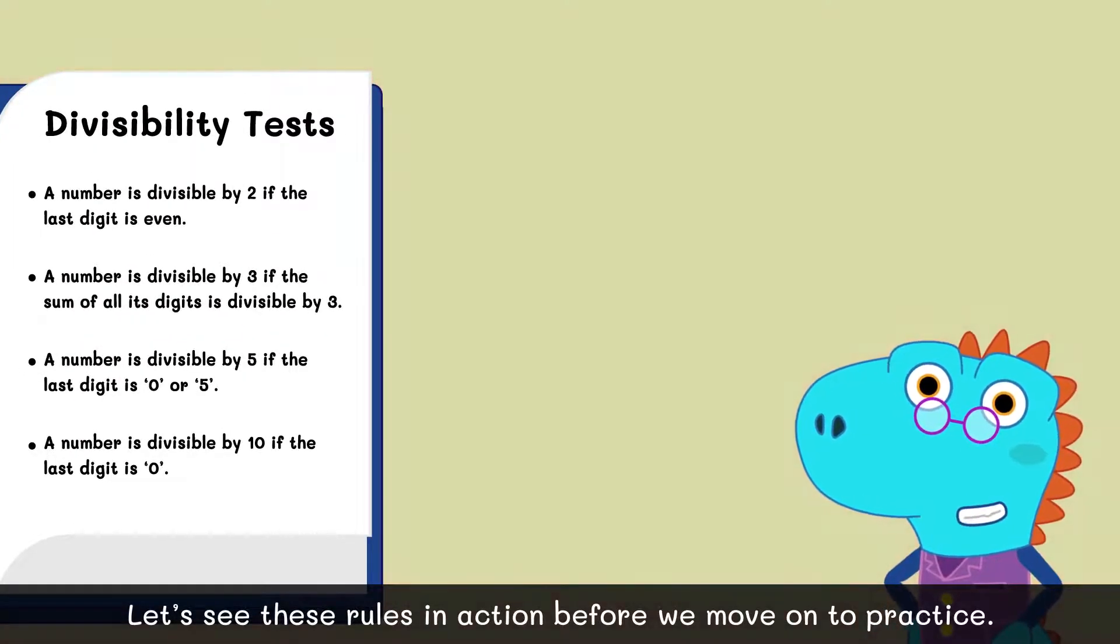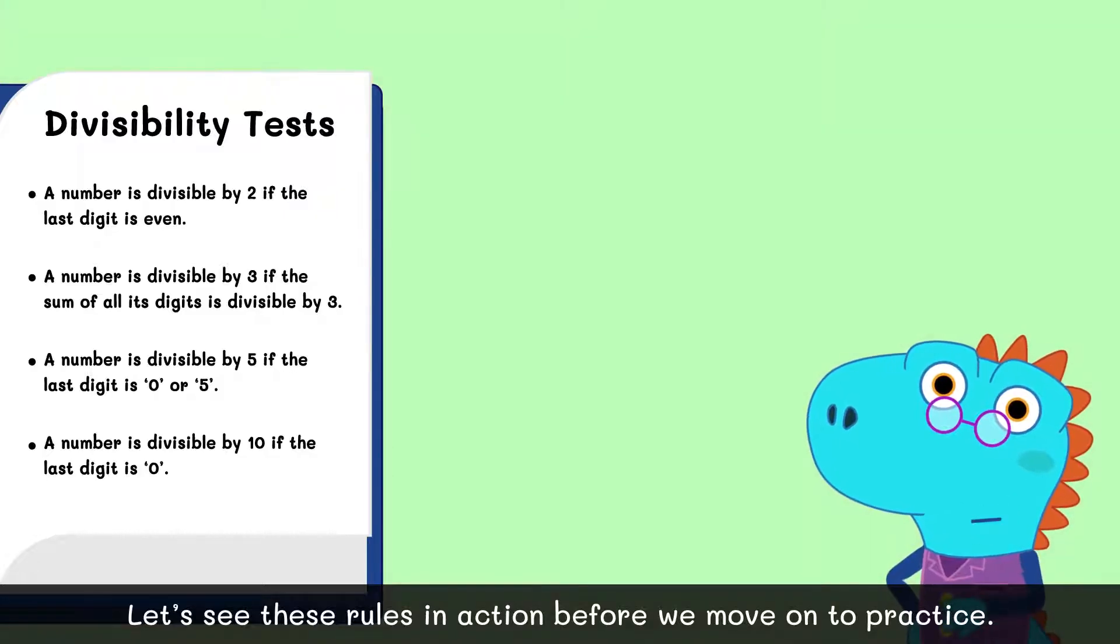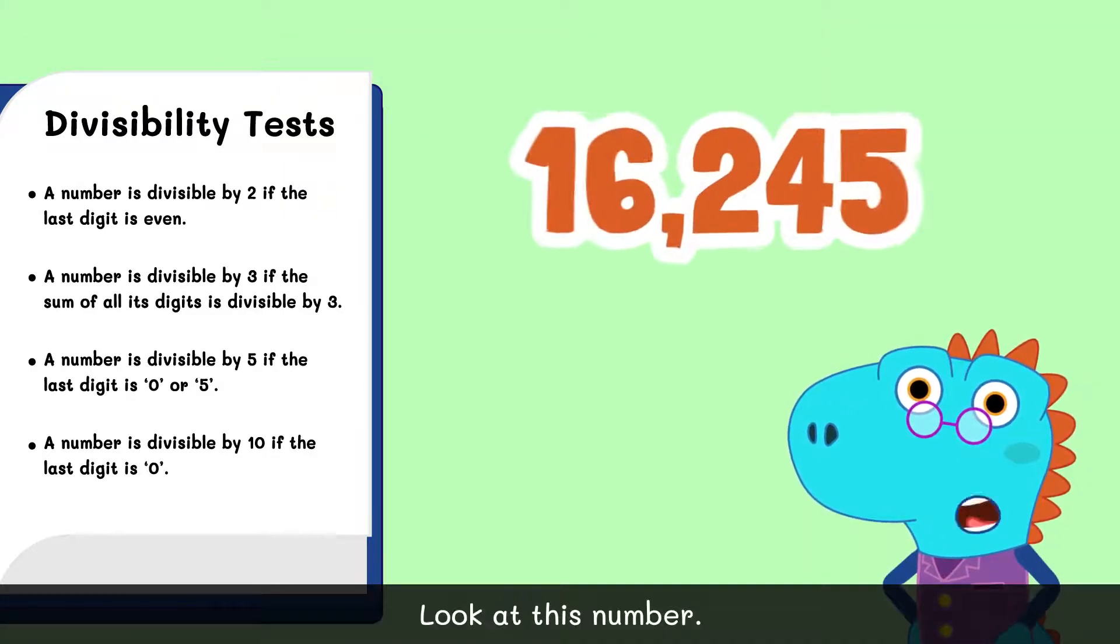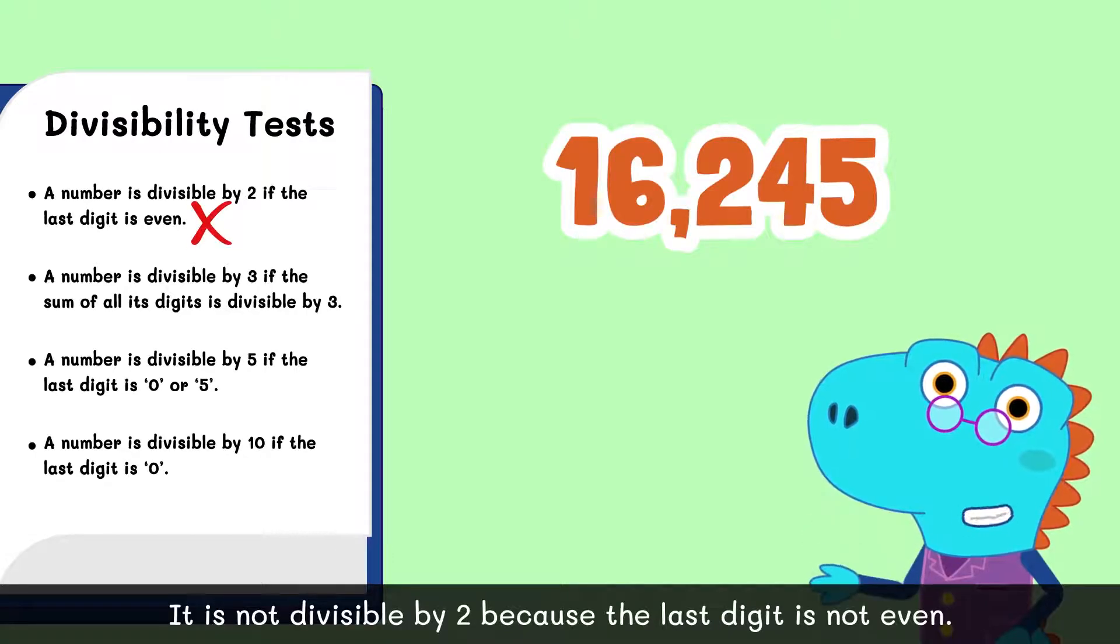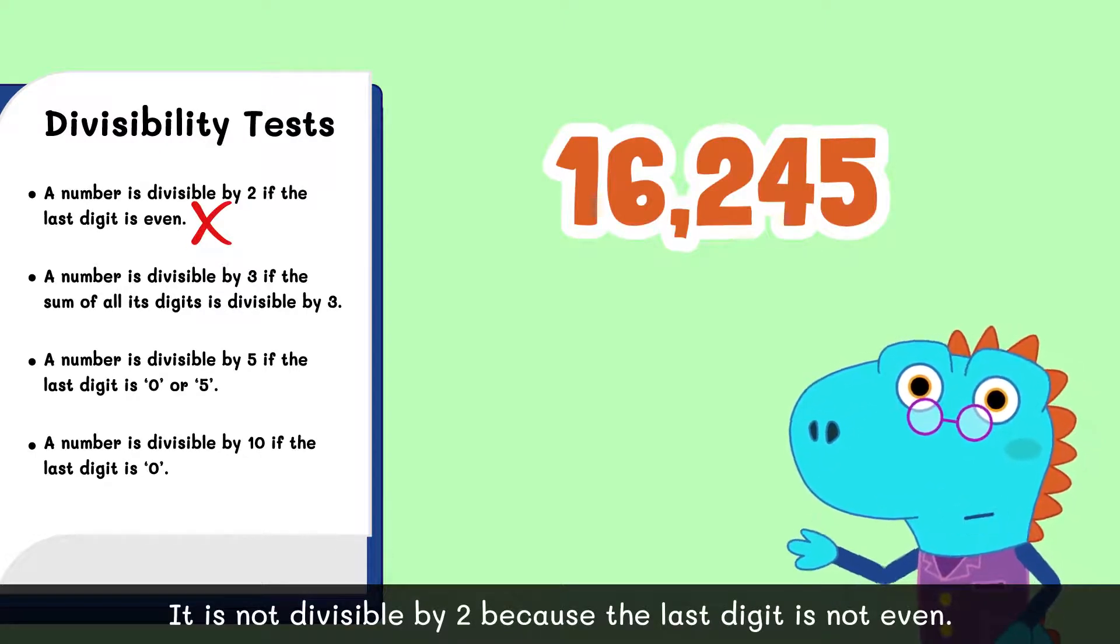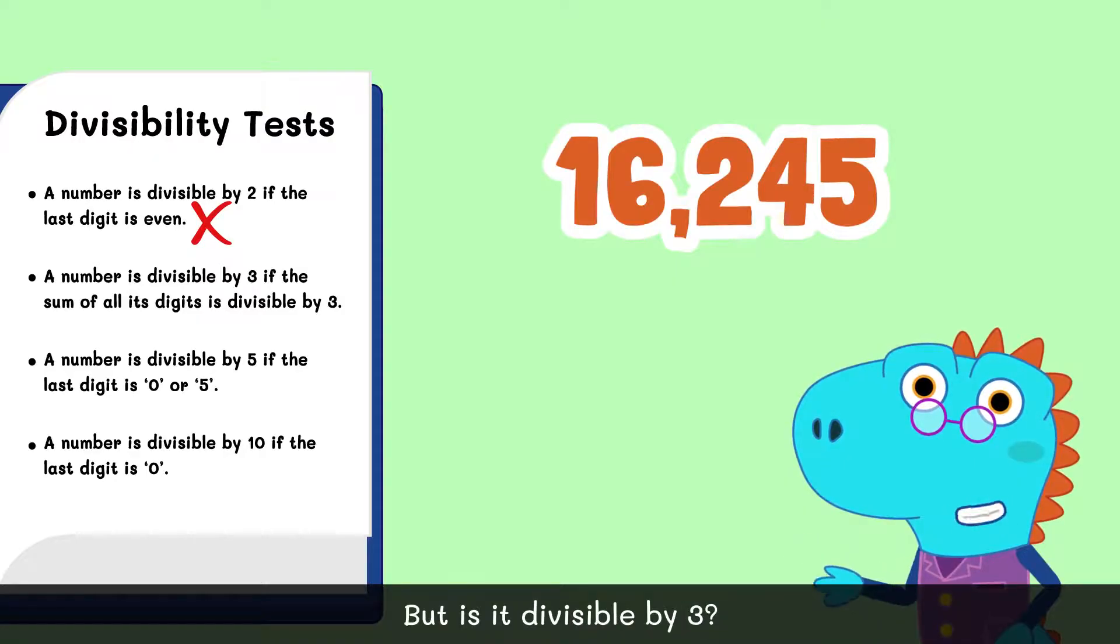Let's see these rules in action before we move on to practice. Look at this number. It's not divisible by 2 because the last digit is not even. But is it divisible by 3?